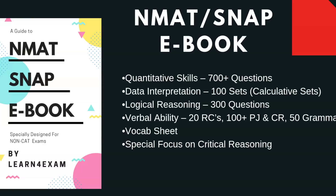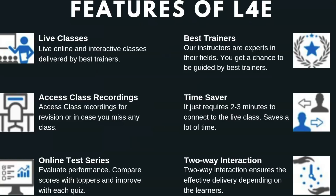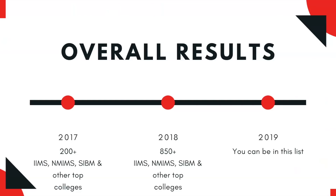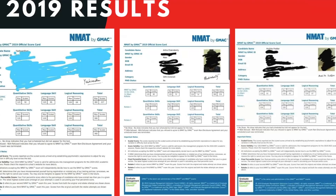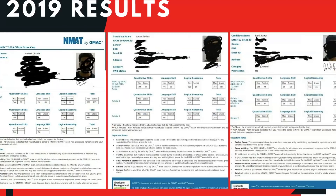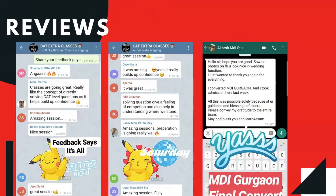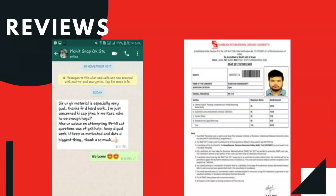The NMAT SNAP eBook is quite a big hit from our end. These are the benefits you get out of the eBook, and these are the features of our classes — we have the best trainers, it only takes two to three minutes to connect to the live class, and you get access to class recordings. These were the overall results for 2017 and 2018 — you can be in the list of 2019. These are our 2019 NMAT results and the reviews of Learn for Exam. Please pause the video and check them out.